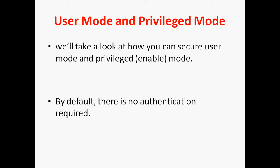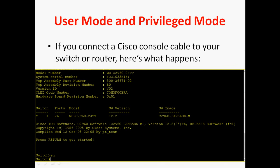So privilege mode, or enable mode — by default there is no authentication required. In the last video session, we saw how the switch will boot up. Once it boots up, it will ask you to press the return key to enter. Once you press enter, it directly goes to user mode. If you connect a Cisco console cable to your router or switch, it boots up and asks you to press return to get started, then takes you directly to user mode. Then you have to give an enable password to enter privilege mode.